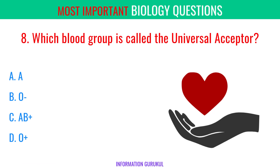Which blood group is called the universal acceptor? AB positive.